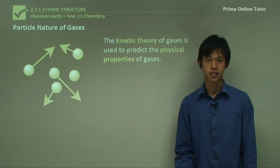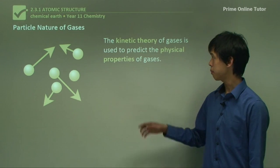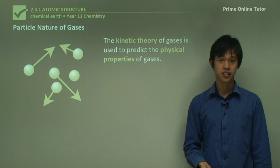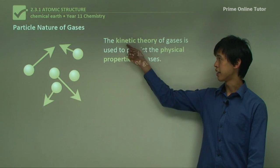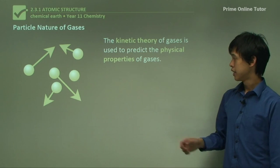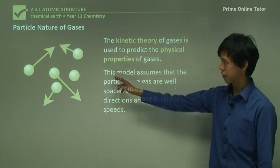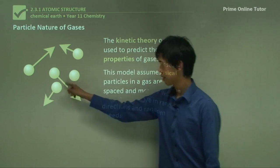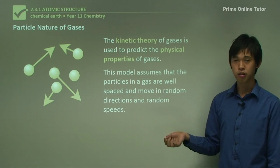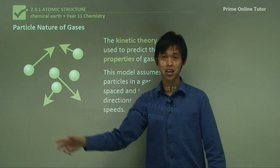The particle nature of gases is where the particle theory sort of came from. The kinetic theory of gases is used to predict the physical properties of a gas — it's an extension of the particle theory. The model assumes that the particles in a gas are well-spaced, with a fair bit of space between them, and each particle moves in a random direction and at a random speed.